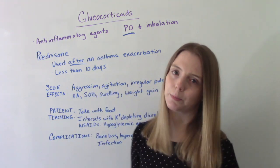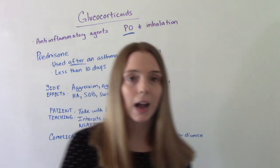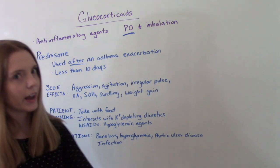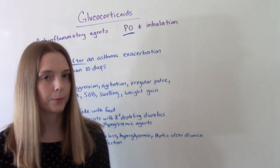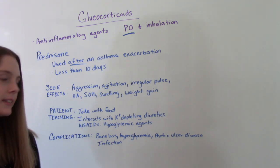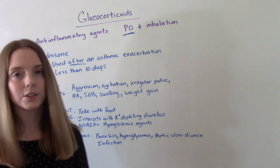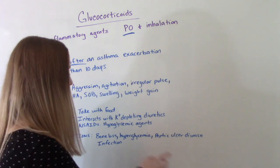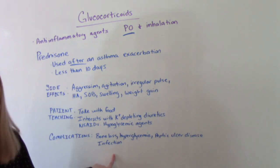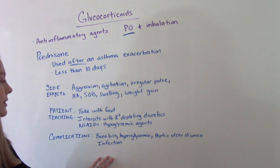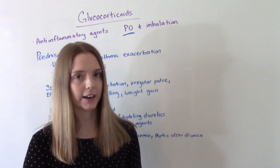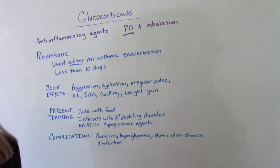Some potential complications that might occur: bone loss — and that's why we don't want them on it for a very long time — hyperglycemia, peptic ulcer disease (which usually happens when they're also taking NSAIDs), and infection. So you want to assess them and teach them how to check themselves for signs and symptoms of infection when they're on this medication.